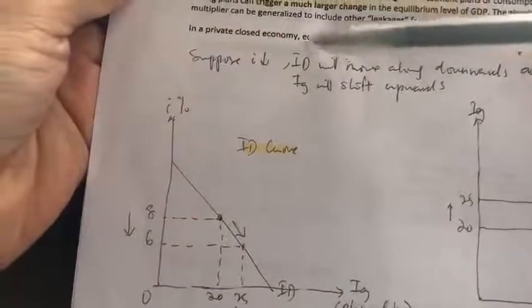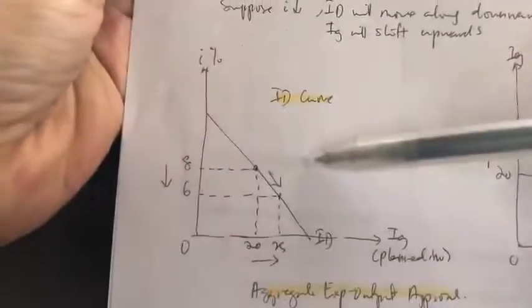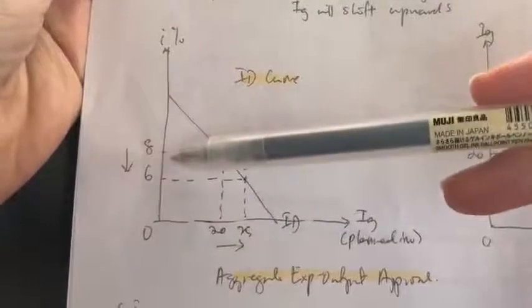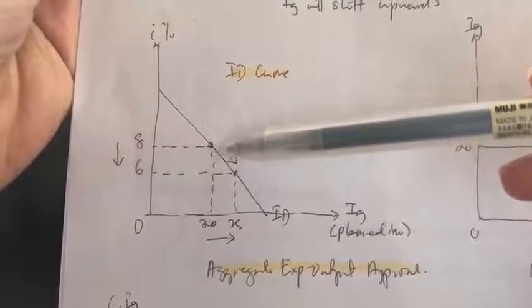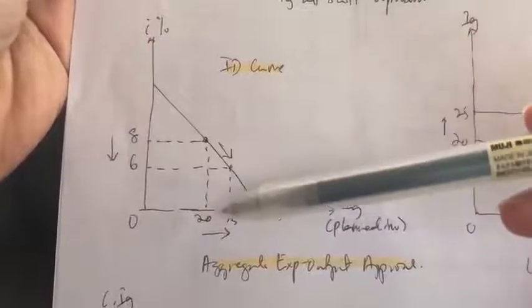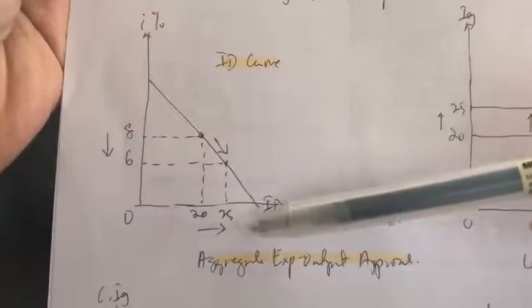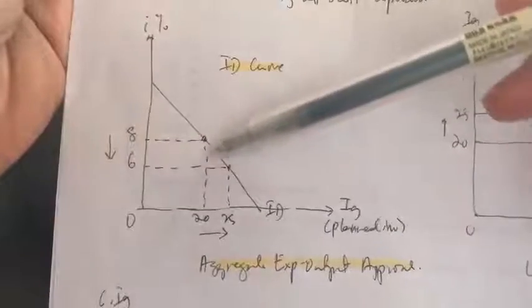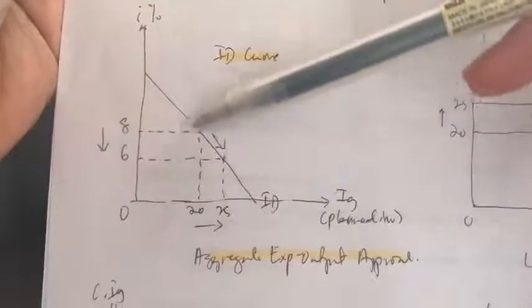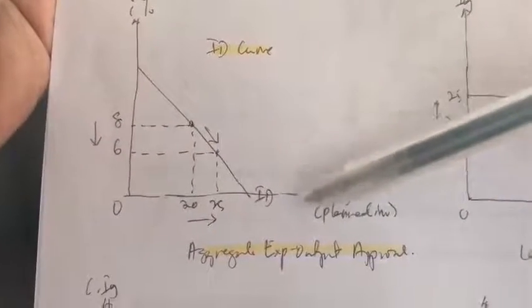Okay, so now, say there's a fall in real interest rate here. Initially, our interest rate was 8%, so the plan investment was $20 billion. Now, when there's a fall in real interest rate, plan investment increased to $25 billion. So, can you see here? There's a downward movement along the same ID curve.